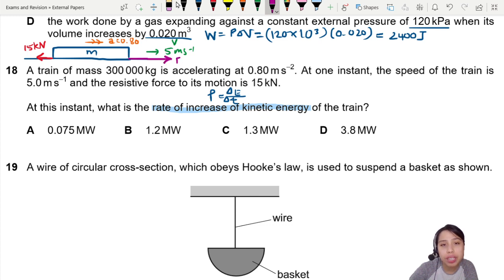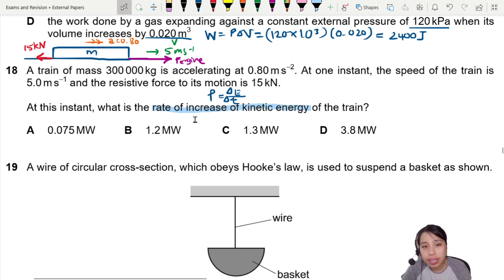So something has to be powering this train forward that is much stronger. Call this the engine force. So engine is pulling this to the right. There is some friction, but overall, the train is getting faster and faster and that's what we want to find.